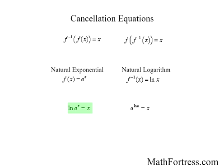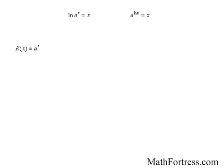So this means that if we have an exponential function with a base other than e, such as r of x equals a to the power of x, we could rewrite a to the power of x as e to the power of ln of a, because that's the same thing as just a, raised to the power of x. And using the properties of exponents, we could rewrite the expression as e to the power of ln of a times x. So if you want to take a derivative of a to the power of x, we are actually taking a derivative of e raised to the power of natural log of a times x.